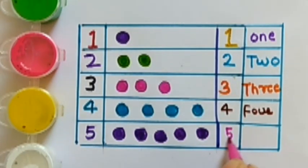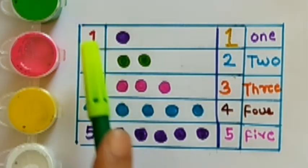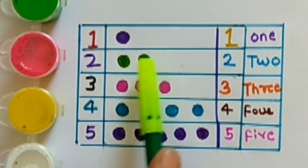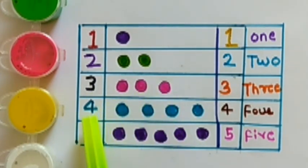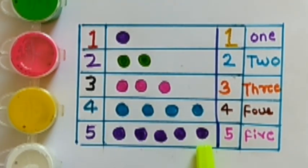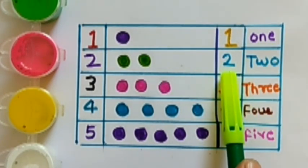1, 1 wall, 2, 1 2, 2 wall, 3, 1 2 3, 3 wall, 4, 1 2 3 4, 4 wall, 5, 1 2 3 4 5, 5 wall.